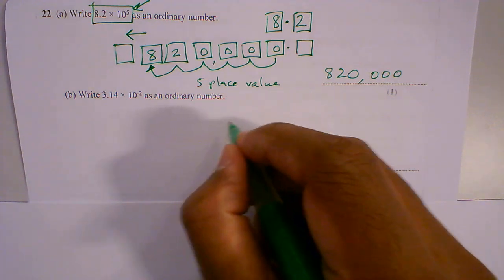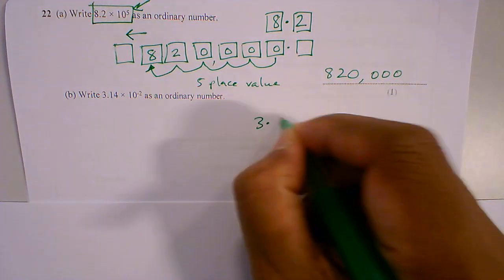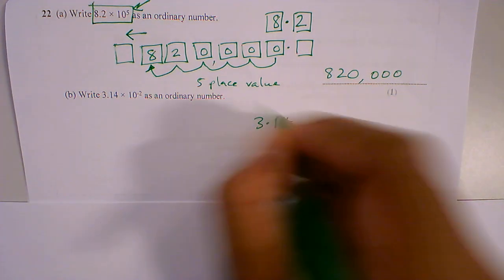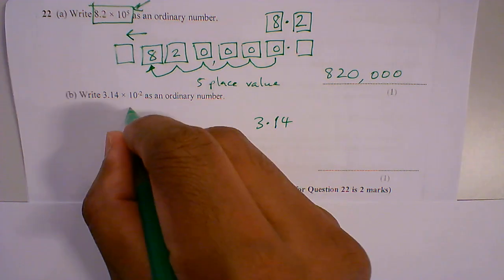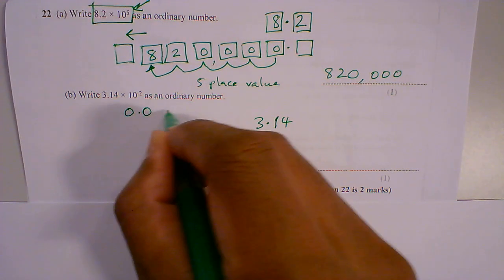So I've got 3.14 times 10 to the power minus 2. 10 to the power minus 2 is 0.01.